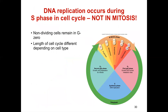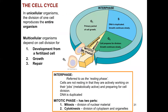DNA replication does not occur during mitosis — it occurs during interphase, specifically the S phase of interphase. Now we're going to talk about the cell cycle. Most of the time cells are in interphase — these are cycling cells. For a unicellular organism the cell cycle is how you reproduce yourself, but for us, what do we use the cell cycle for? That is for development.